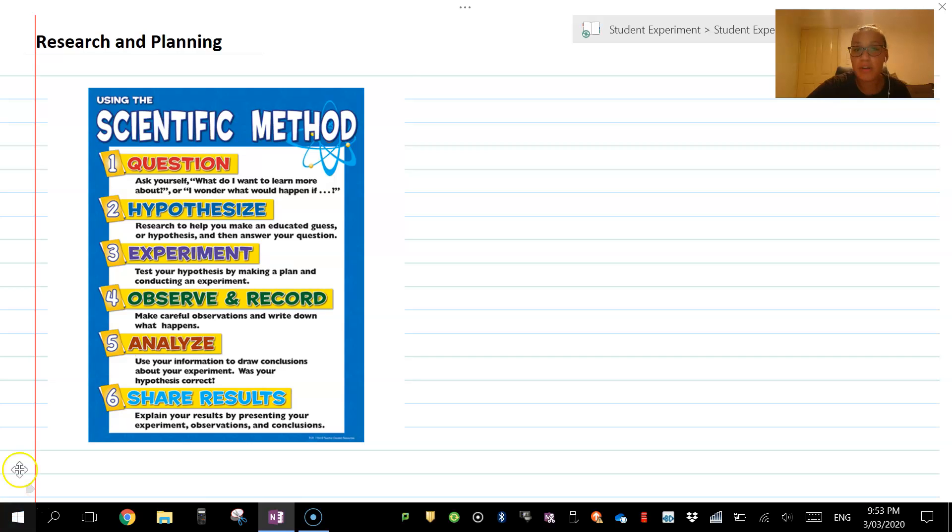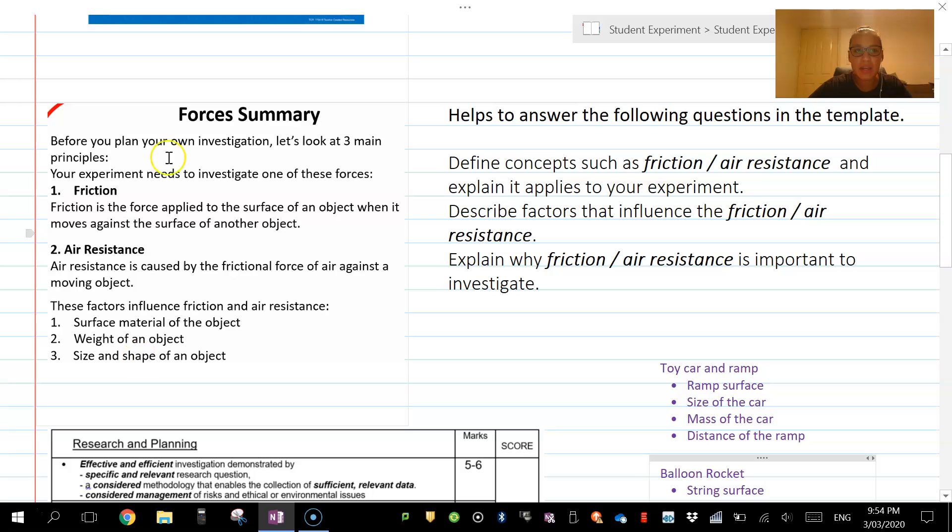What we're going to be looking at in this one is making sure you've got a research question that is appropriate for your assessment. Here is some of that information that we have. In a real report, we would have an introduction, and that's explaining the scientific concepts that link to our experiment.